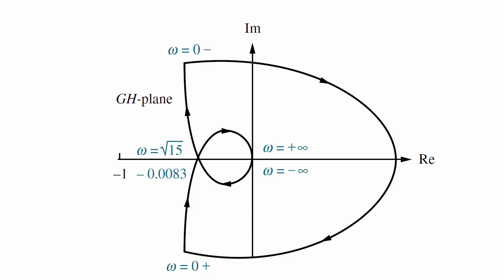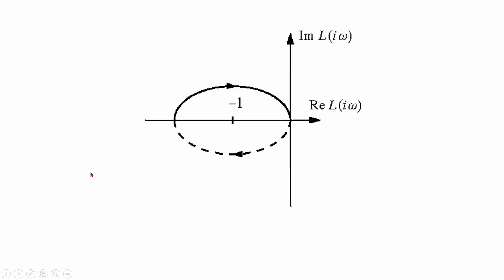Now, let us take two more examples where we will try to understand the encirclement. So this example shows no encirclement about the point minus 1 while this example shows one encirclement. If you start from the point omega equal to 0 and you keep on moving along the plot, then you will find that there is an encirclement that happens about the point minus 1.